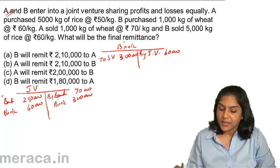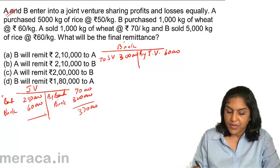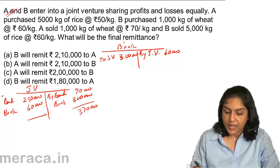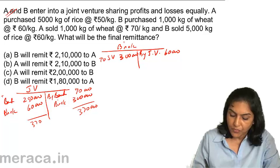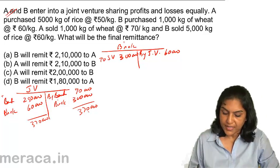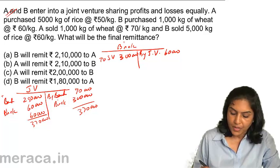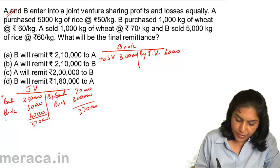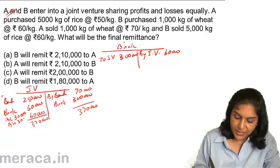The credit side totals ₹3,70,000 and the debit side totals ₹3,10,000. Therefore, the profit is ₹3,70,000 minus ₹3,10,000, which gives a profit of ₹60,000. A's share of profit goes to profit and loss account — ₹30,000. B's share of profit is also ₹30,000.